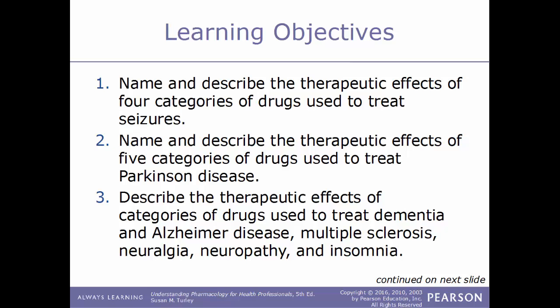Learning objectives for this chapter: name and describe the therapeutic effects of four categories of drugs used to treat seizures; name and describe the therapeutic effects of five categories of drugs used to treat Parkinson's disease; describe the therapeutic effects of categories of drugs used to treat dementia and Alzheimer's disease, multiple sclerosis, neuralgia, neuropathy, and insomnia.